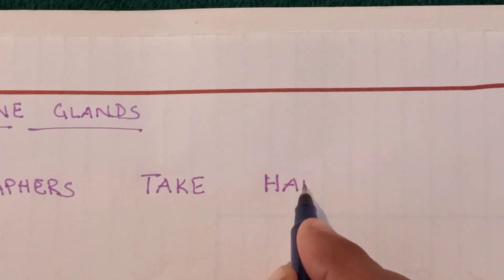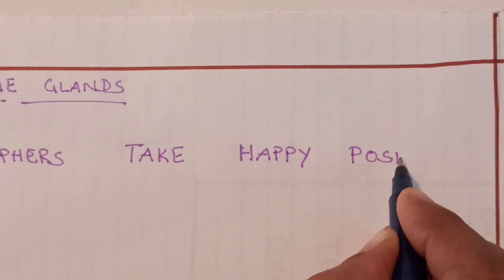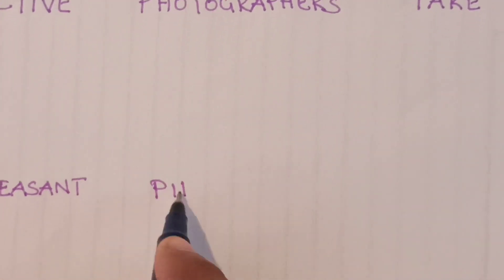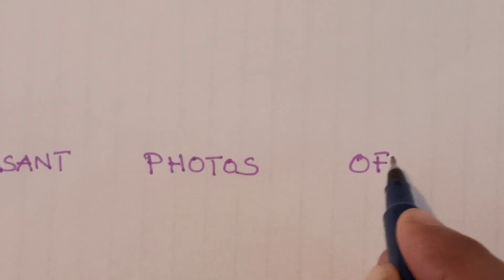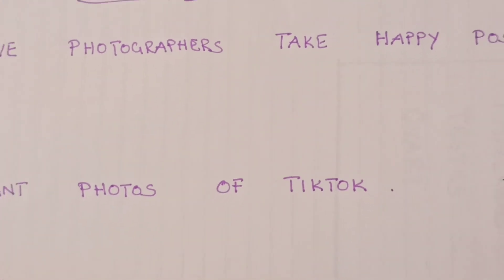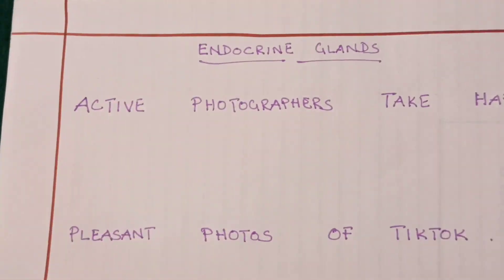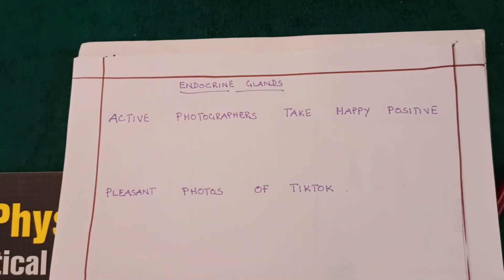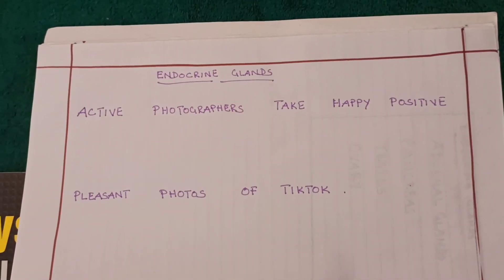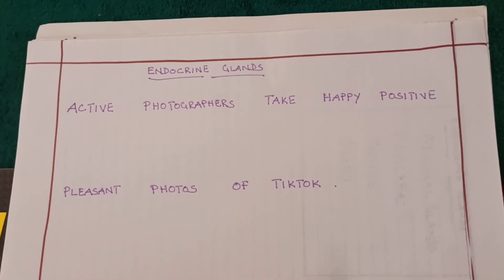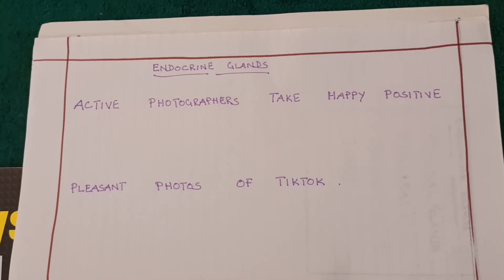Active photographers take happy positive pleasant photos of tik-tok. By remembering this simple sentence you can recollect all the important endocrine glands.